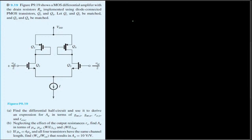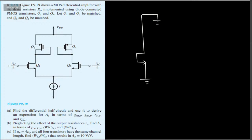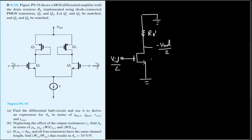Let's draw that diagram. We take one half of the circuit with Q1 remaining. The bottom is connected to ground, the top is also connected to ground, and wherever the PMOS was, it is replaced with resistance RD'. The input voltage is VID over 2, and the output voltage is negative VOD over 2. This is the differential half circuit.